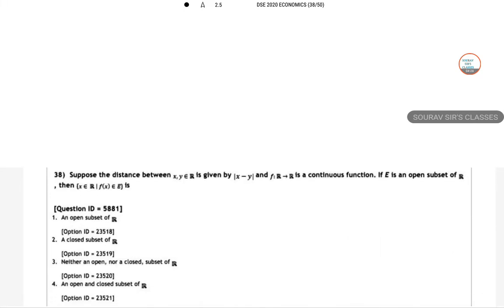38. Suppose the distance between x and y is given by |x - y| and the continuous function E is the open subset of R. Then what happens to this one?